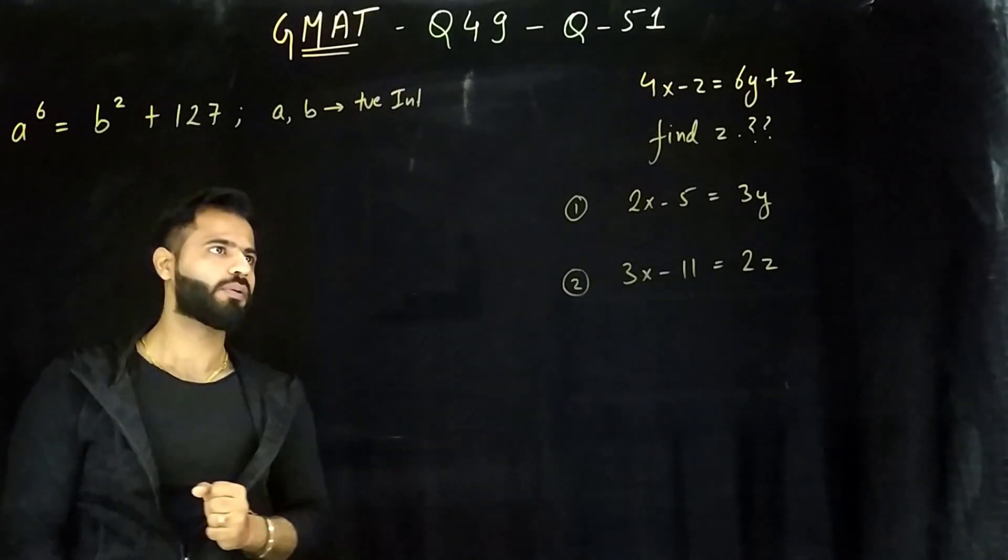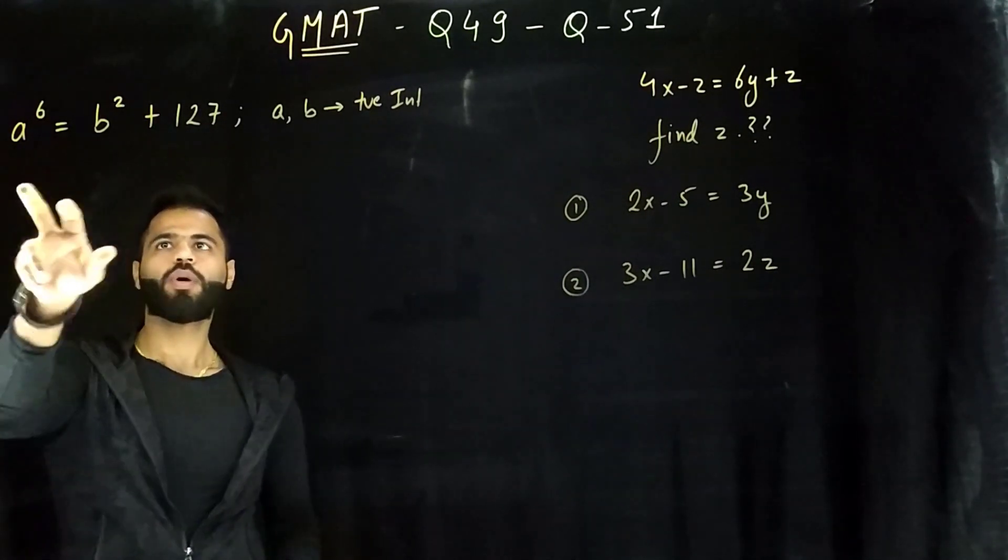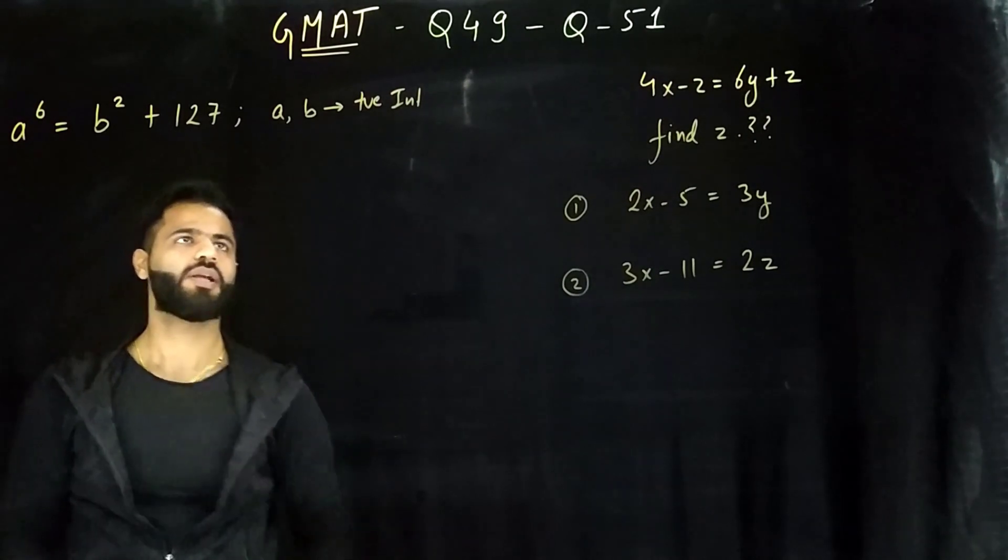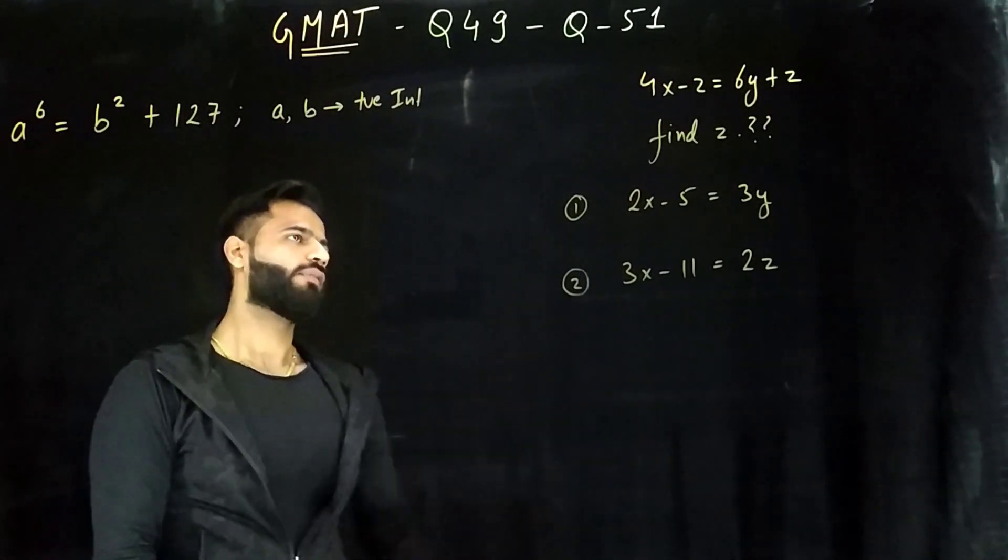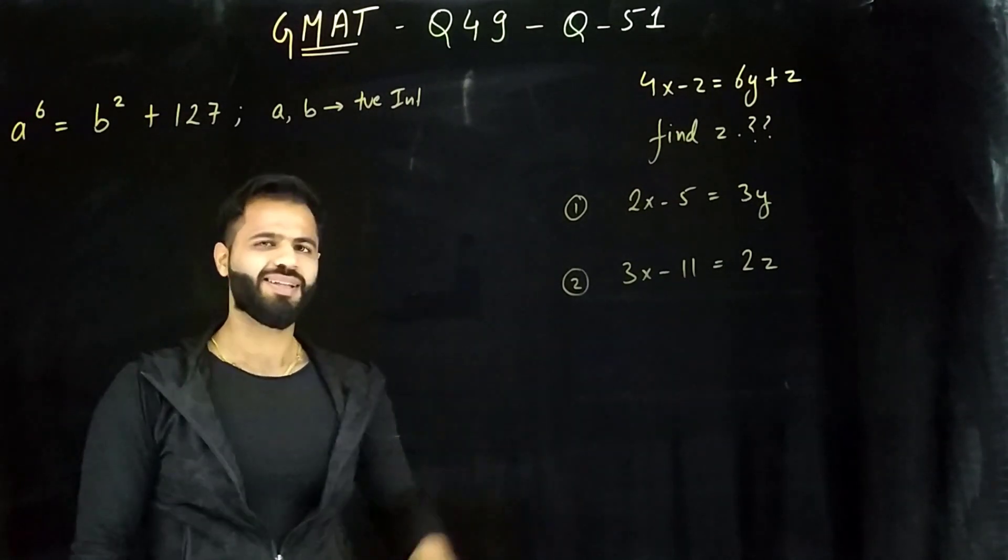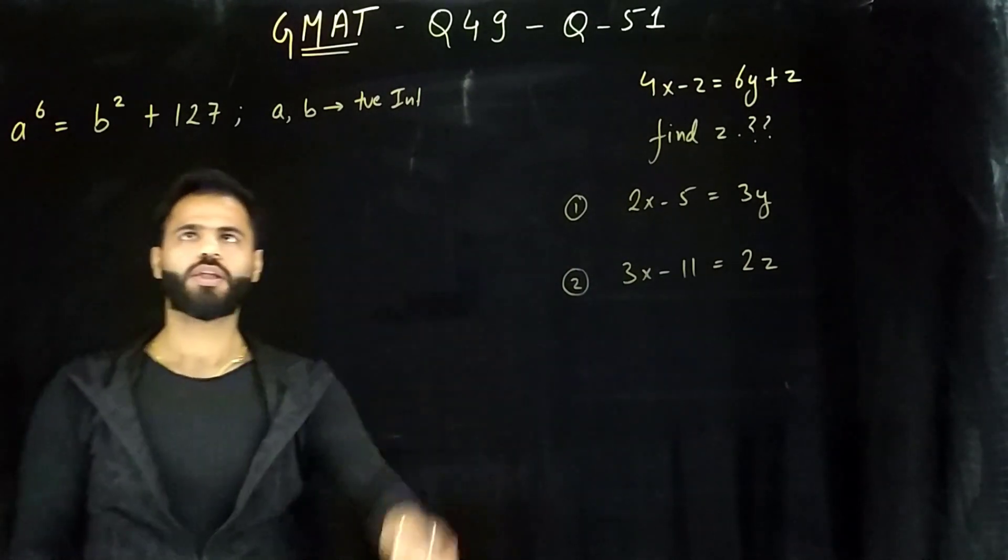Here are the 2 questions which we are going to discuss one after one. In this one, we have 2 variables and 1 equation, but we have given an extra information: A and B are positive integers. Here, we have 3 variables, and if I combine these both, then I have 3 equations. But let's see if one of them is sufficient or not. Let's go ahead and start with this one.